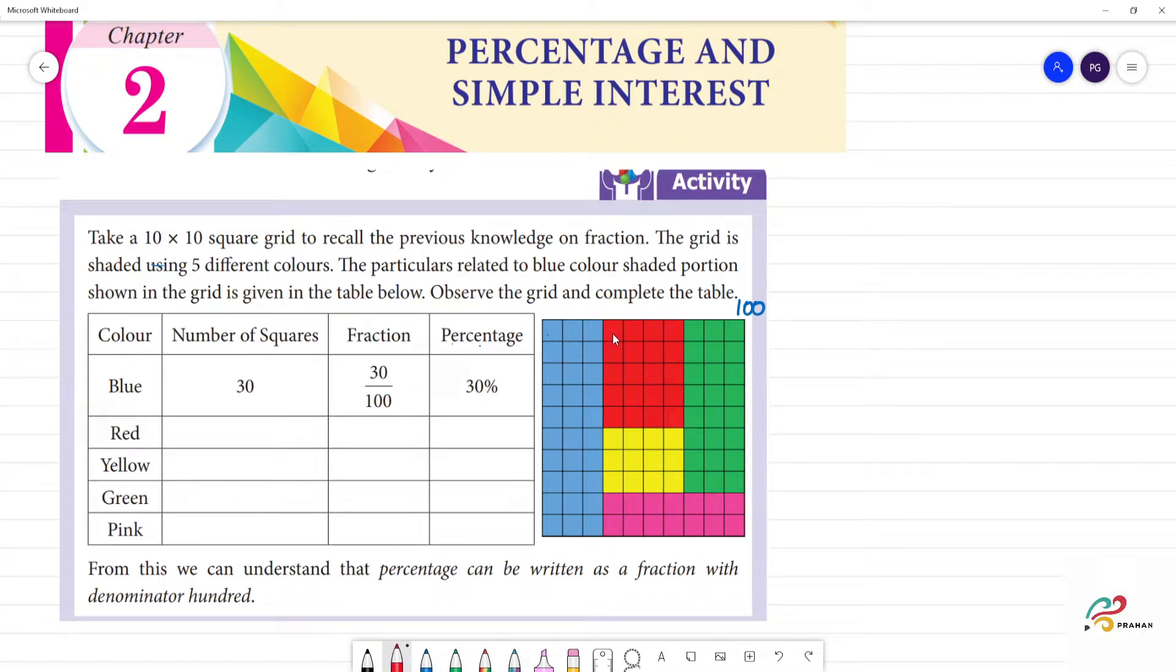Now red. Red is where you can see: 1, 2, 3, 4 rows. Then 5 rows equal to 20. So total is equal to 20 squares. Fraction is equal to 20 divided by 100. So percentage is equal to 20 percent.